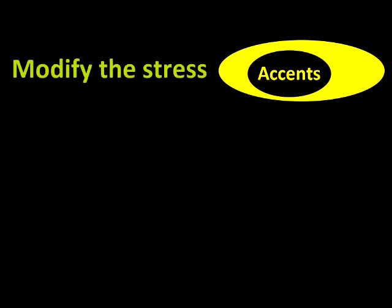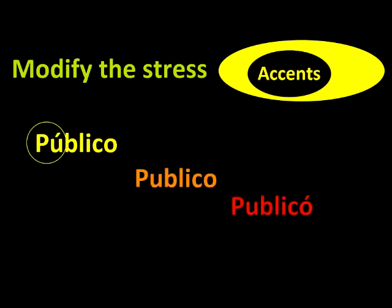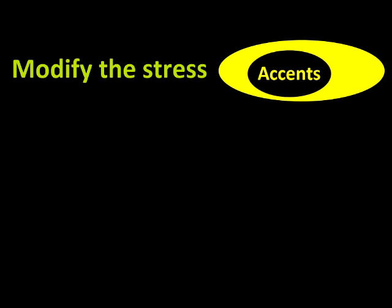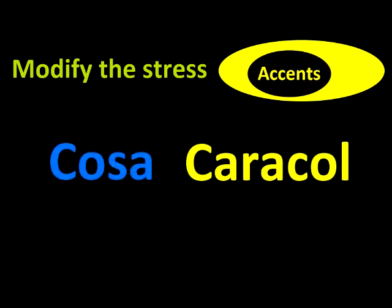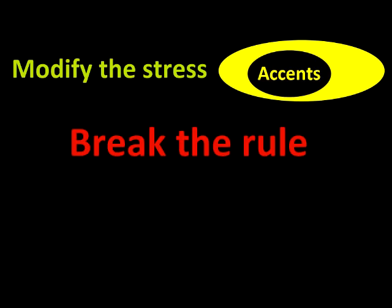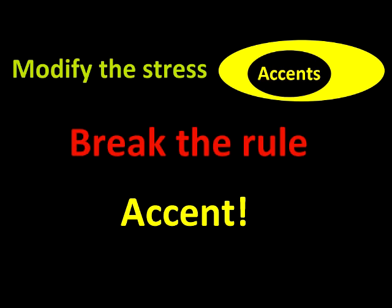First, they modify the stress of the words. Where to put the stress in a Spanish word is very, very important, so that we don't confuse words like público, publicó, and publico. That's why we always know where to put the stress in a word when we read it. The general rule is the following: if the word ends in a vowel, an N, or an S, the stress falls on the last syllable but one, and otherwise it is always the last one. For example, cosa, caracol. And when we want to break that rule, we have to write an accent on the vowel of the syllable that we are stressing, so that everybody knows we are breaking the rule.